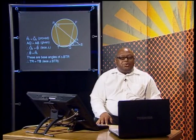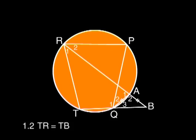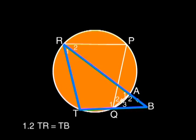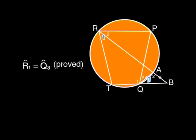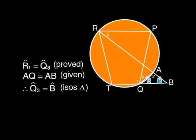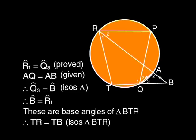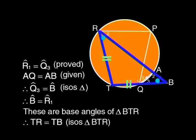Let's take question 1.2. We must prove that TR equals TB. These are part of triangle BTR. If we can show angles B and R1 are equal, then the triangle is isosceles and the sides will be equal. We've proved that angle Q3 equals angle R1. Using the equal sides given in triangle ABQ, Q3 equals B (isosceles triangle). That leads to angle B equals angle R1, meaning triangle RTB is isosceles and TR equals TB.